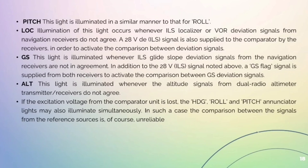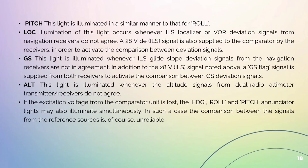ALT: This light is illuminated whenever the altitude signals from dual radio altimeter transmitter-receivers do not agree. If the excitation voltage from the comparator unit is lost, the HDG, roll, and pitch initiator lights may also illuminate simultaneously. In such a case, the comparison between the signals from the reference sources is of course unreliable.